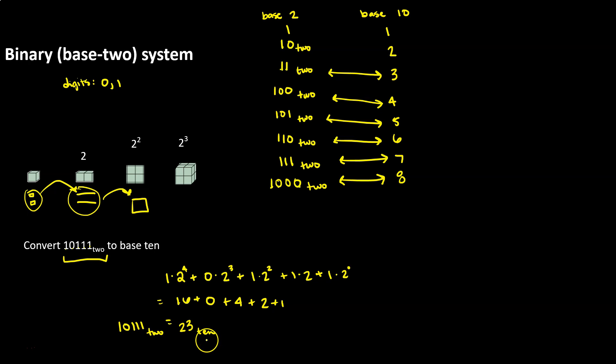If we are taking a number that is written in some other base system, all we have to do is write it in expanded form using the appropriate base for each place value and then multiply it out. Converting in the other direction takes a little more work.